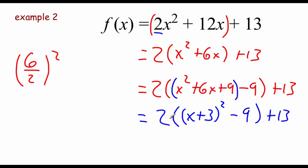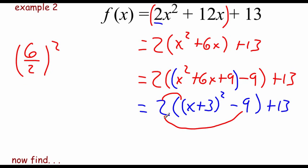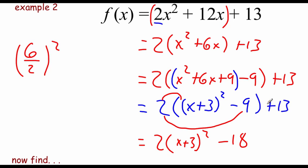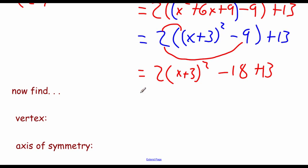We have this 2 out in front that we need to deal with before we can drop those outer parentheses. Using the distributive property, we multiply the 2 by x plus 3 squared to get 2 times x plus 3 squared, and multiply 2 by negative 9 to get negative 18. Since we distributed that 2, we're now allowed to drop the outer set of parentheses, which lets us combine like terms — negative 18 and plus 13. So our final equation in standard form is 2 times x plus 3 squared minus 5.